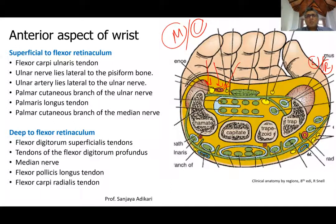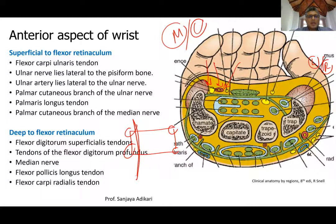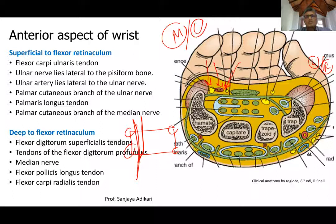You can see the ulna nerve here, and the ulna artery lateral to the ulna nerve. There is another nerve further lateral to the artery, which is the palmar cutaneous branch of the ulna nerve. That branch is given off before the beginning of the flexor retinaculum, so it is a separate branch superficial to the flexor retinaculum. The ulna artery lies between the two nerves — the main ulna nerve and its palmar cutaneous branch.